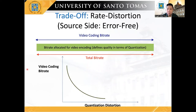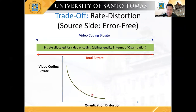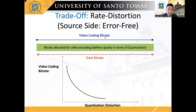It is important to note that the only present distortion for an error-free scenario is the quantization distortion. As shown in the figure, it has a decreasing relationship with the increase in video coding bit rate. For an error-free environment, it is intuitive that the total bit rate should be allocated to the video coding side to minimize the quantization distortion.